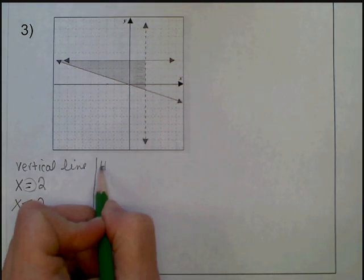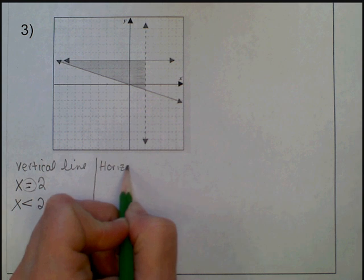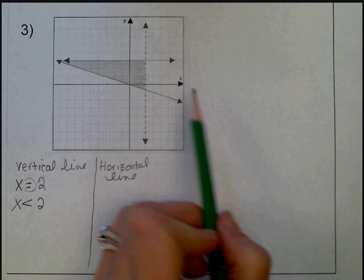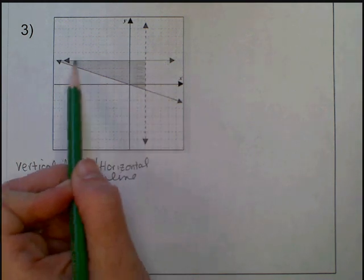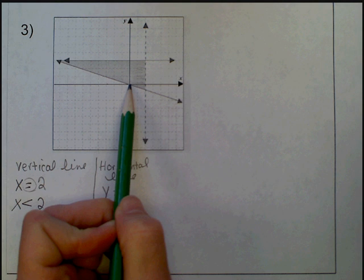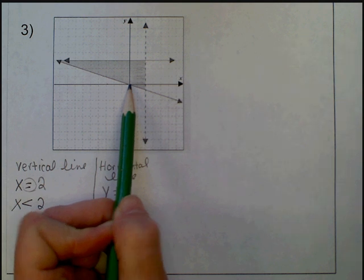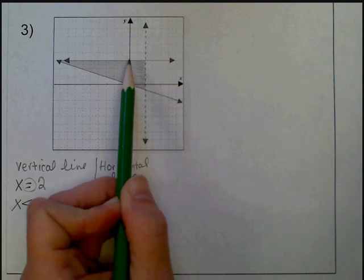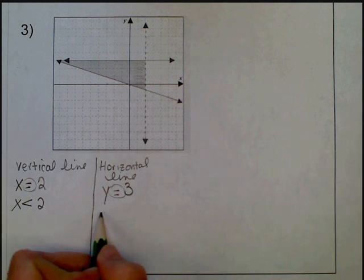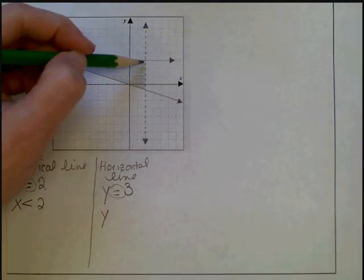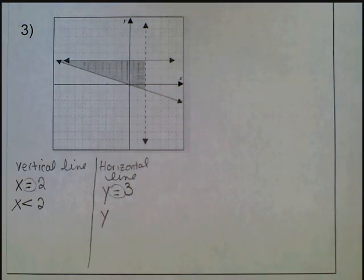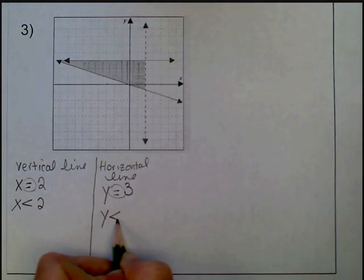Now I'll write the equation for the horizontal line. Horizontal lines are always y equals a number. I see it goes through y equals 3. I can see the shading is underneath that line, so the inequality is y is less than 3.